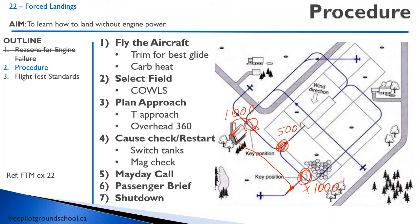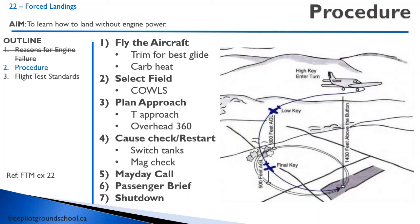Here's a video of this type of procedure — pay attention to the cadence and how quickly I go through this and get everything taken care of. Here's another procedure — we talked about the T-approach, which you just saw. Now this is an overhead 360: all you do is go to your runway and just circle your way down all the way and come in and land. That's another way to do it.